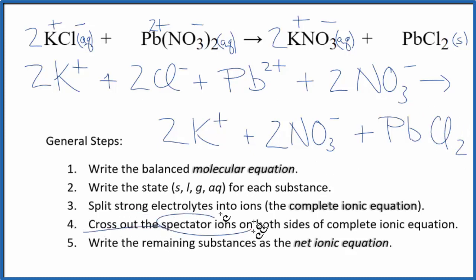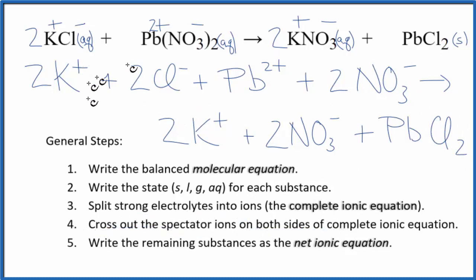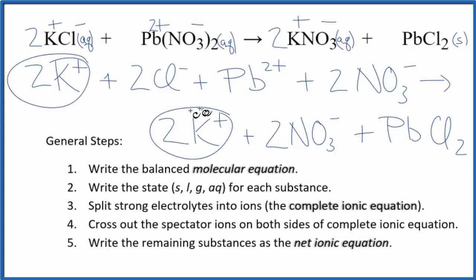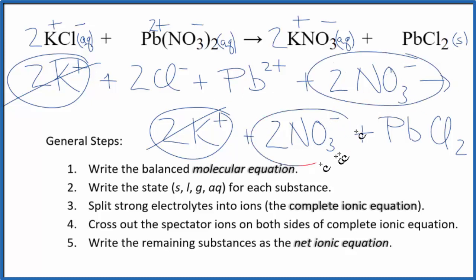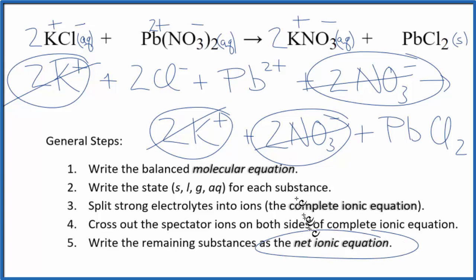Now we can cross out spectator ions — they're on both sides of the complete ionic equation. In the reactants I see two potassium ions, and in the products as well — get rid of those. Two nitrate ions here in the reactants, and two in the products — get rid of those. What's left is the net ionic equation for KCl plus Pb(NO₃)₂.